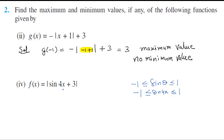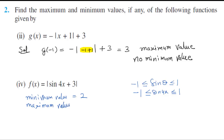If sin 4x is minus 1, then the minimum value of the function is minus 1. If I talk about the maximum value, sin 4x equals 1 at maximum, so you add 1 and the maximum value is 4. So if you are asked in an exam for the minimum or maximum value, you can use this technique rather than derivatives. You can use this technique from your previous class.